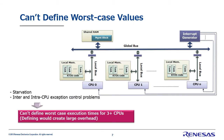There is one more problem: worst case execution time values cannot be guaranteed. In systems of three or more CPUs, starvation and problems with both inter- and intra-CPU exception control can lead to undefined worst case execution times, or a massive overhead if software is developed to allow them to be defined. An explanation of starvation and inter- and intra-CPU exception control problems would take too long here, so please see the supplementary report for more details.